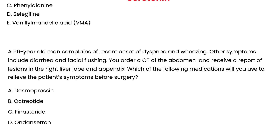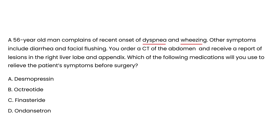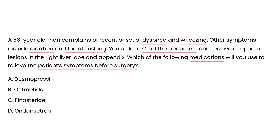A 56-year-old man complains of recent onset of dyspnea and wheezing. Other symptoms include diarrhea and facial flushing. A CT of the abdomen shows lesions in the right liver lobe and appendix. It sounds like the tumor started in the intestine and then metastasized to the liver, which is why this patient has developed symptoms. Which medication will you use to resolve the patient's symptoms before surgery? To decrease symptoms, you want to give a medication that inhibits the release of most hormones — and that is octreotide.